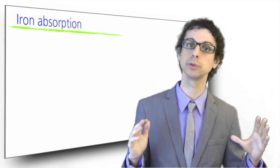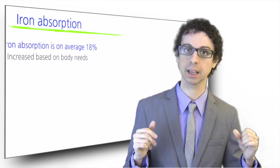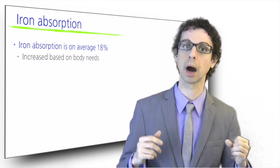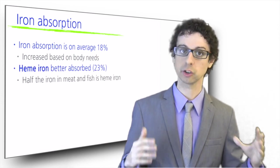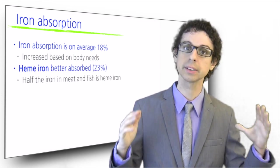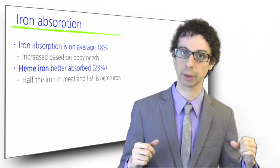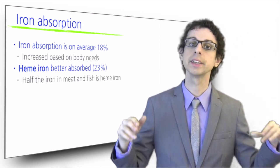Iron absorption from food is on average 18%, but it can increase based on body needs. In meat and fish, about half of the iron is contained in hemoglobin and myoglobin. This iron, called heme iron, is absorbed slightly more efficiently at a rate of about 23%.